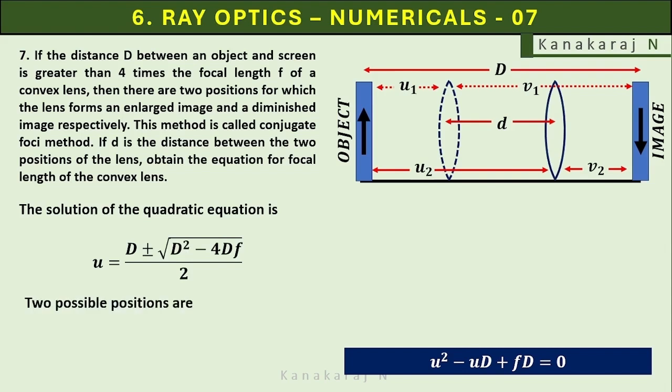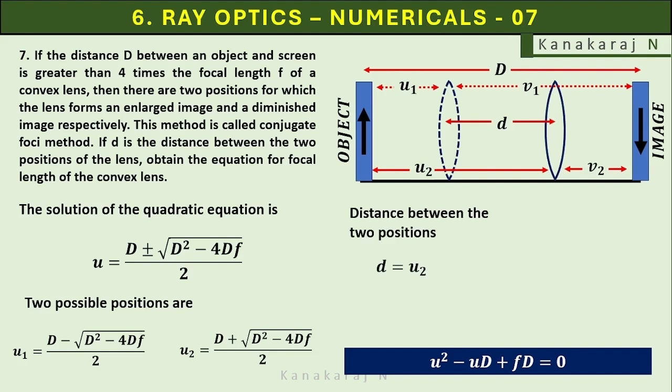Two possible positions are there. u2 equals D plus root of D square minus 4Df upon 2. The distance between the two positions small d equals u2 minus u1. So here the D upon 2, D upon 2 getting cancelled.